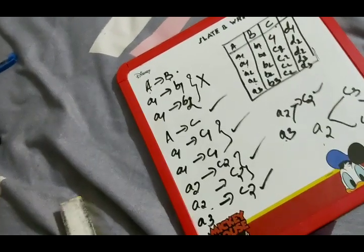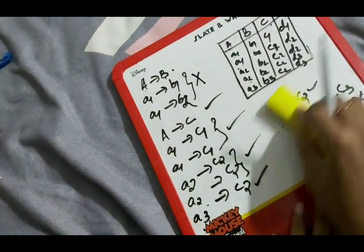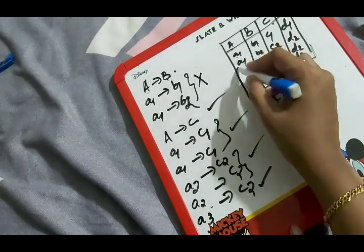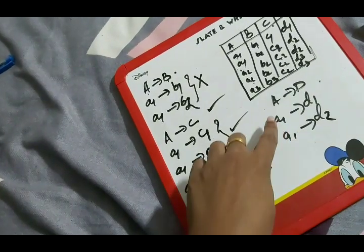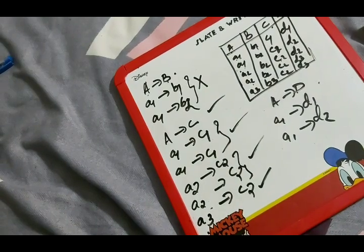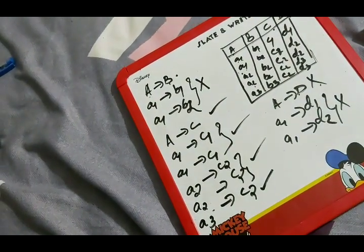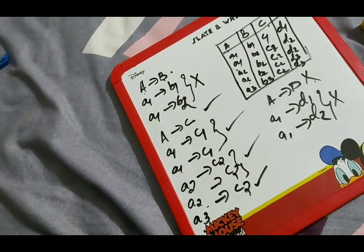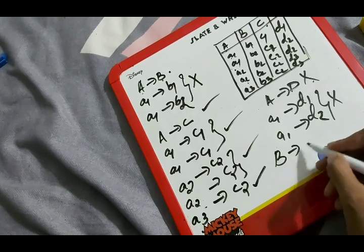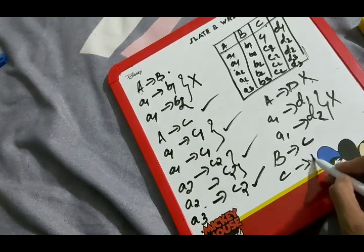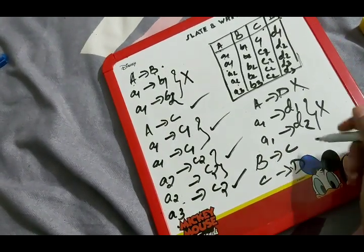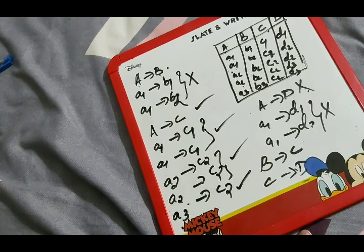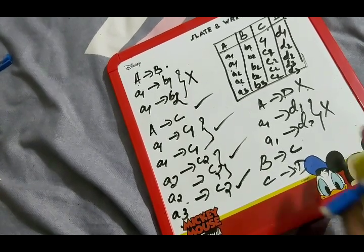Now checking A determines D: a1 determines d1, but then a1 determines d2 — two different instances of D for the same A. So A is not functionally dependent on D. To summarize: functional dependency is a relationship among attributes, and we verify it by checking whether each value of one attribute uniquely determines a single value of the other. That's all about functional dependency. Thank you.